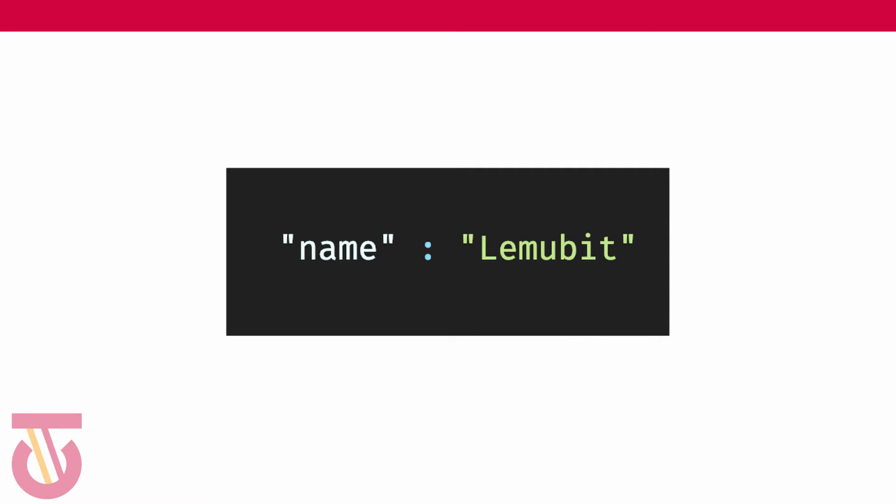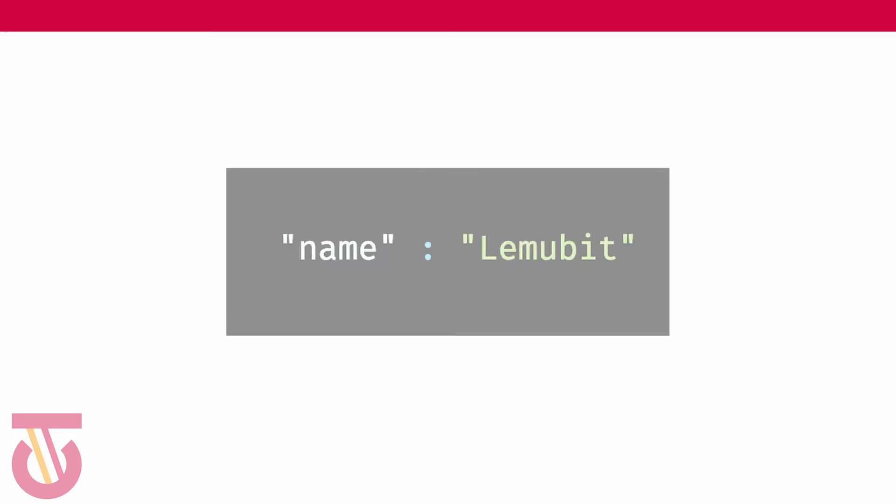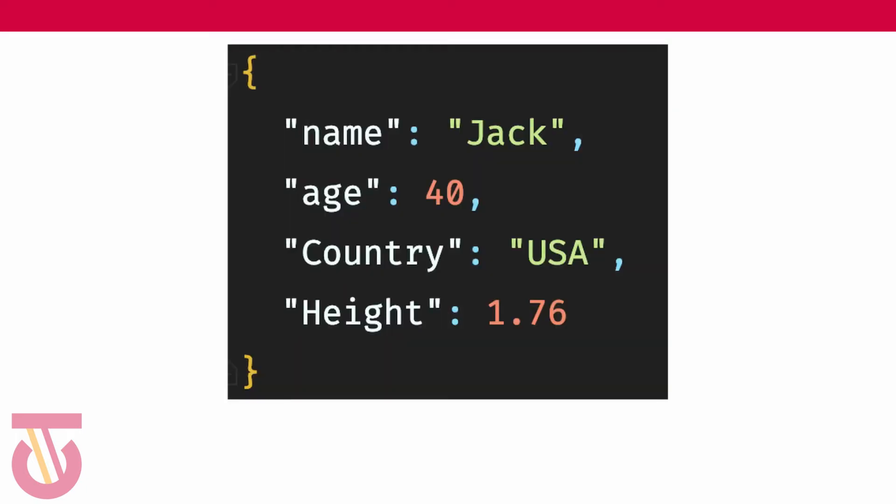So we have a name here that has a value 'lemmo bit'. You could have a more complex key-value structure — for example, this could represent an object that has a key 'name' with a value 'jack', an age of 40, country 'USA', and height 1.76. You can see that the values have different data types. Also, you would see curly braces in JSON.